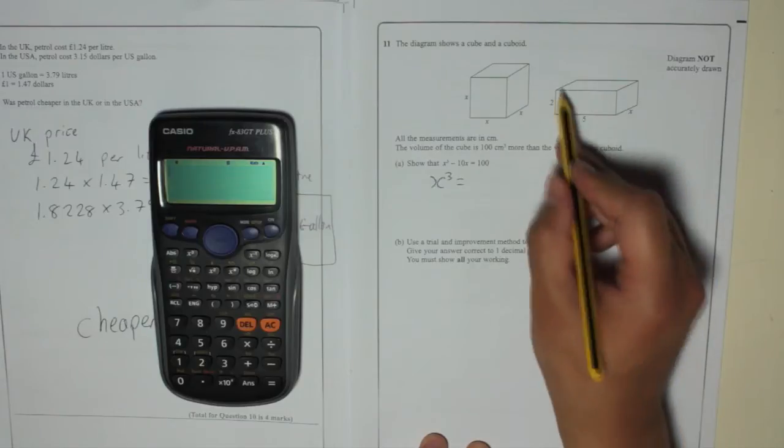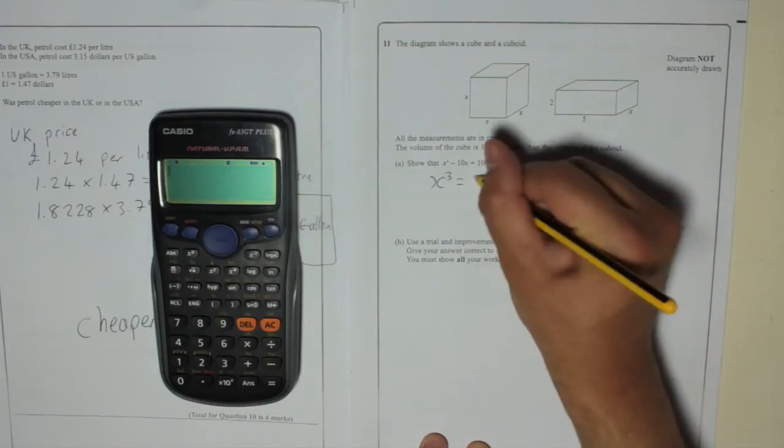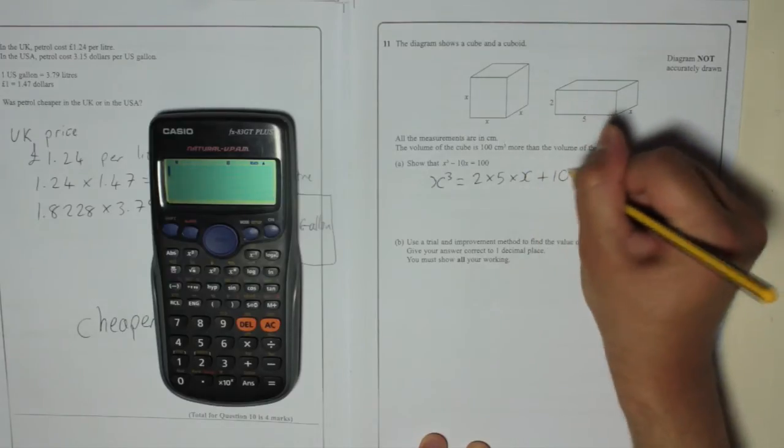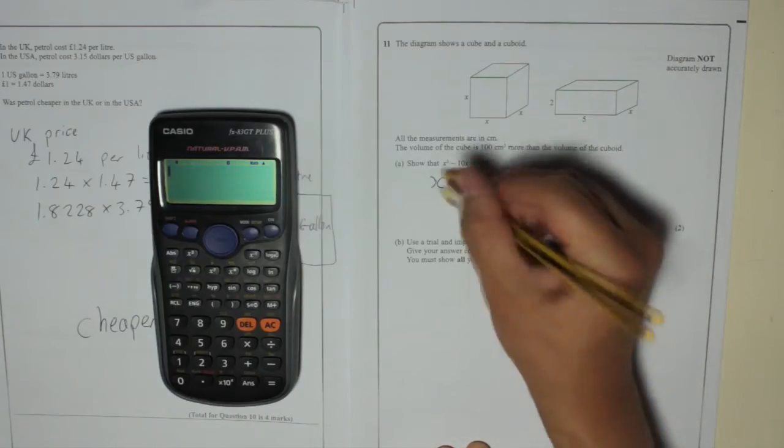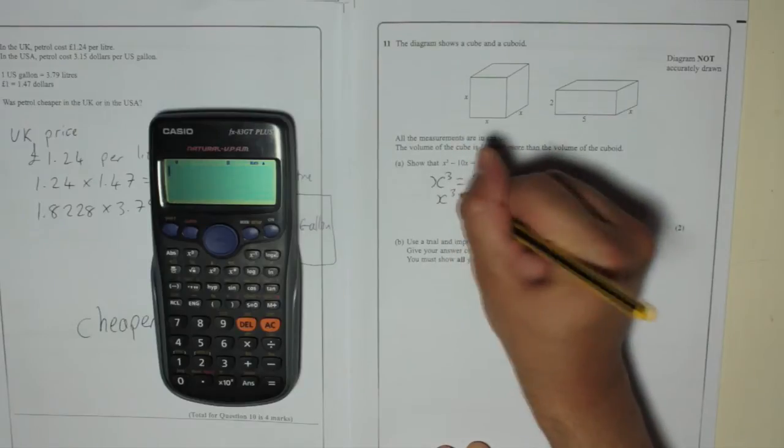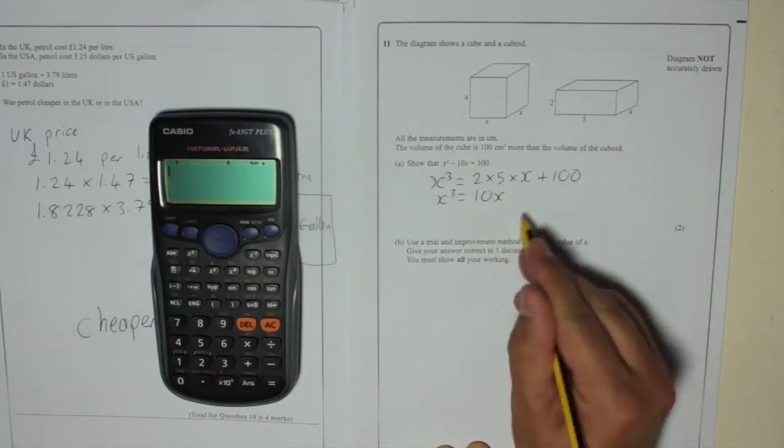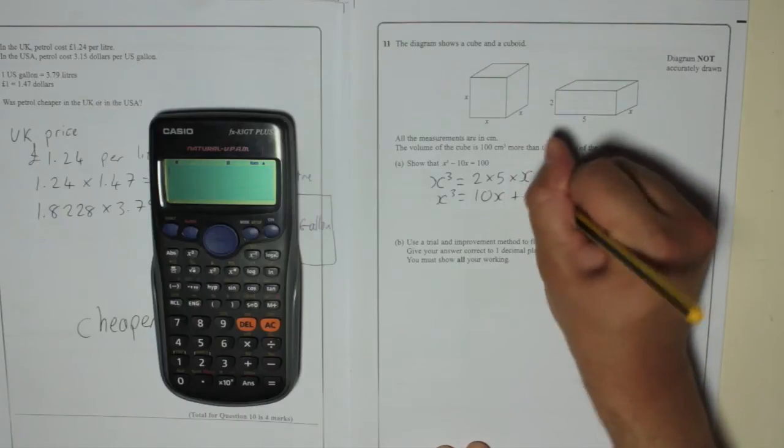And that is 2 times 5 times X. 2 times 5 times X plus 100. So tidy that up. You've got X cubed is equal to 2 times 5 is 10. So 10X plus 100.